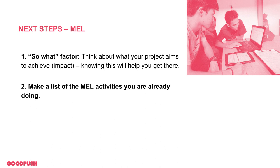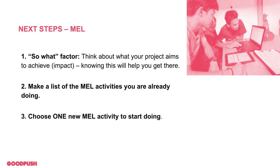A second helpful activity is to make a list of the MEL activities you're already doing. There's a checklist in the resources section of the toolkit. Once you know what activities you're doing, you can try writing this into a short paragraph to provide to supporters or put into a project proposal. A third next step is to choose one new MEL activity to start doing — take a look at that checklist, see the different examples, maybe the survey or Most Significant Change story discussed today. If you're more ambitious, you can delve into logical frameworks or theory of change, which are covered in the guide on this toolkit.